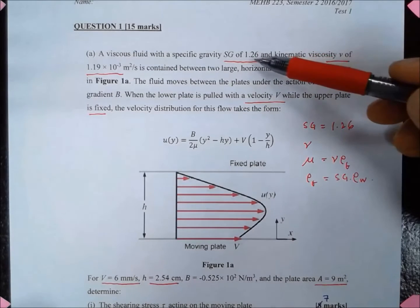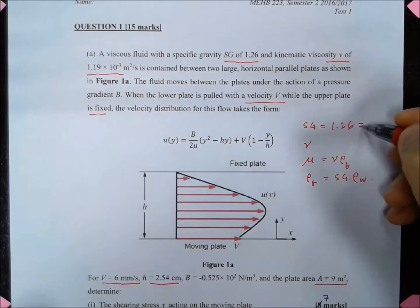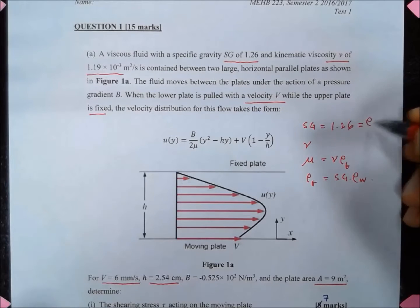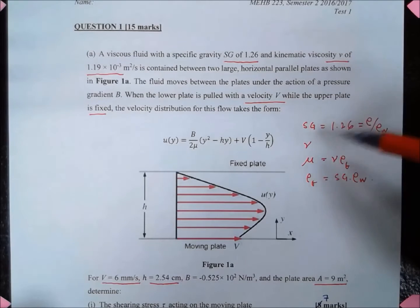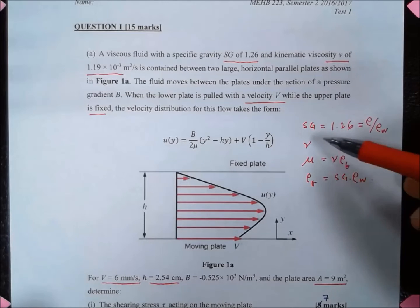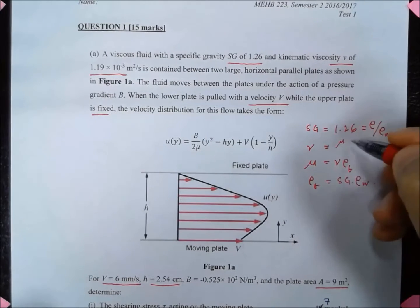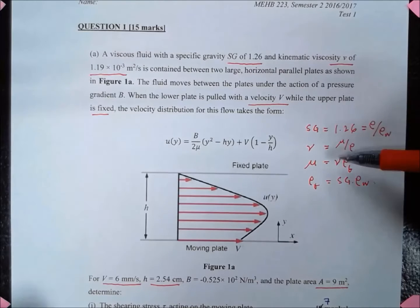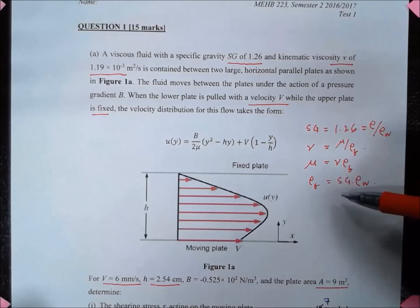So here we are given Sg, the specific gravity equal to 1.26. And we know that Sg is the relative density with respect to density of water. We are given the kinematic viscosity nu rather than mu, and we know that nu is equal to mu divided by rho. So from that we can calculate mu which is equal to nu times rho fluid. And rho is given by Sg multiplied by rho of water.